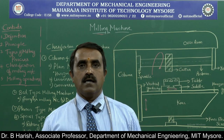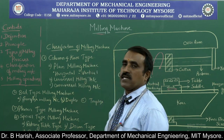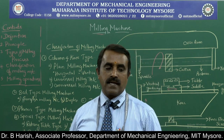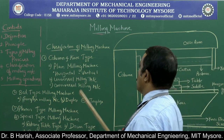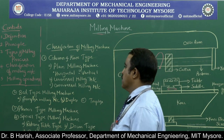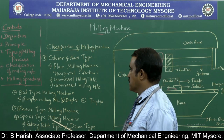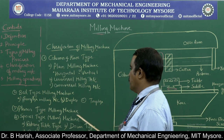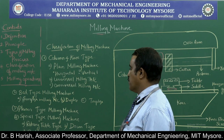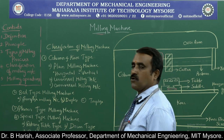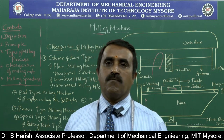Now we will discuss the classification of milling machines. The first type is column and knee type; second is bed type; third is planar type; and the last is special type of milling machine — which includes rotary table type, drum type, profiling type, and tracer control type.